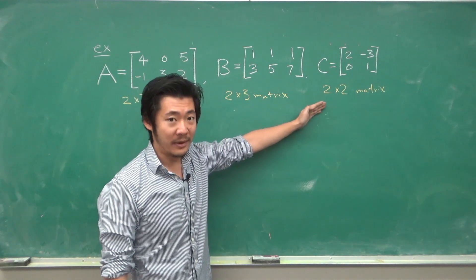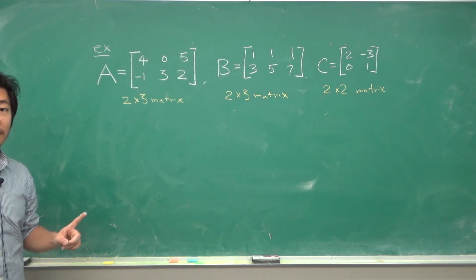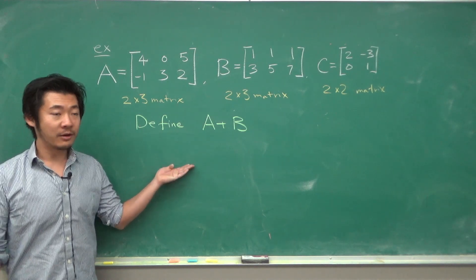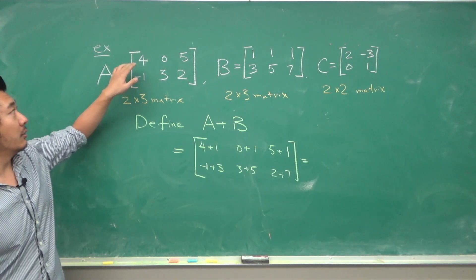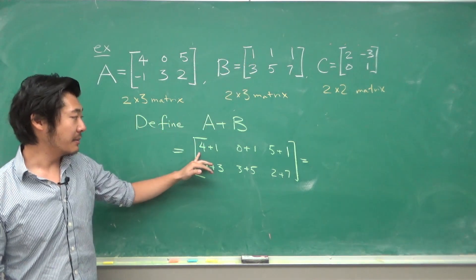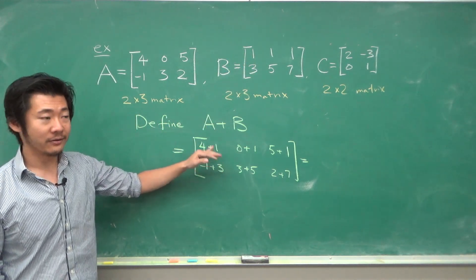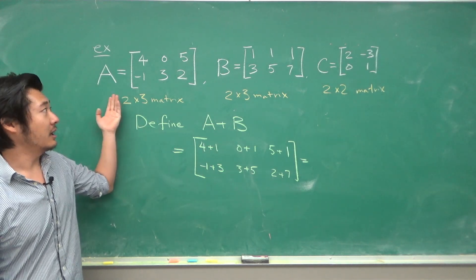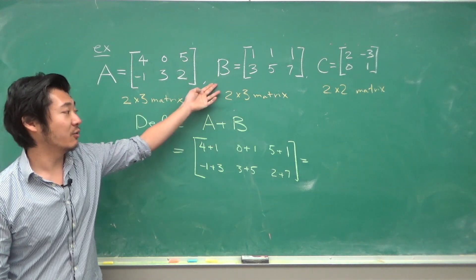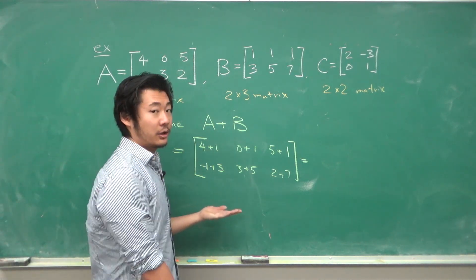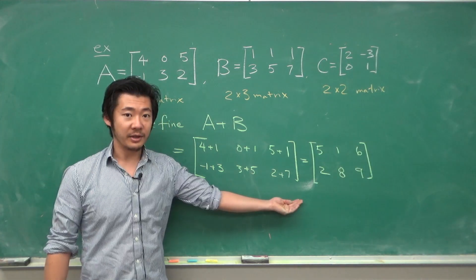We can define the sum of two matrices as just the component by component addition, where the (1,1)-th entry of A plus the (1,1)-th entry of B becomes the (1,1)-th entry of A+B. In general, the i-jth entry of A plus the i-jth entry of B becomes the i-jth entry of A+B.